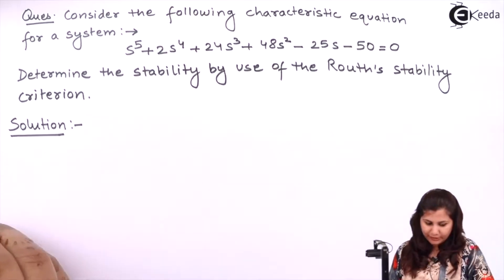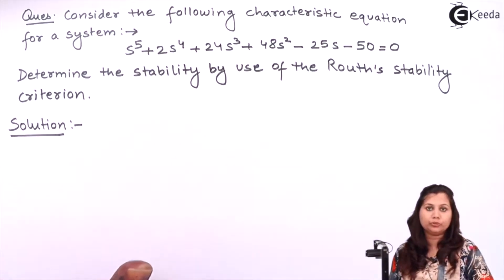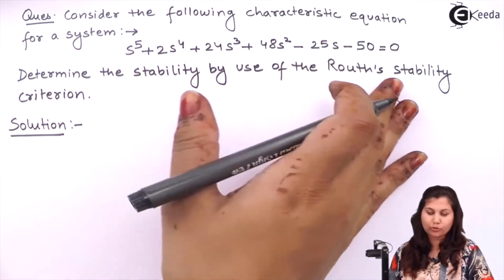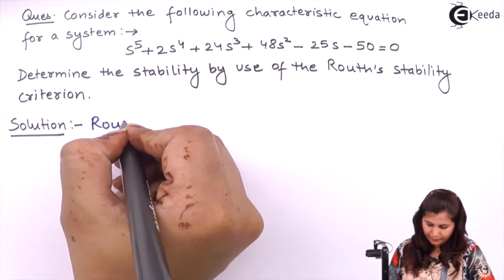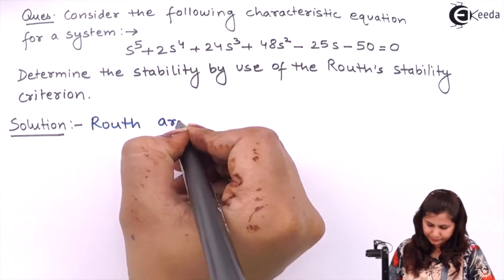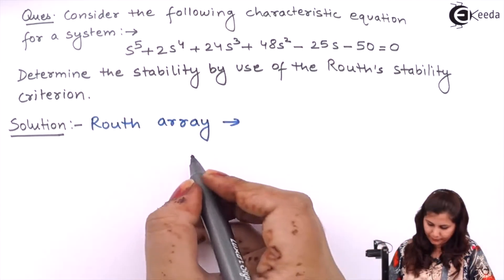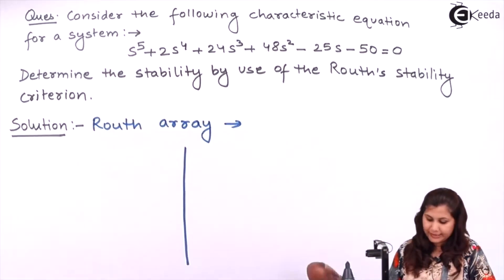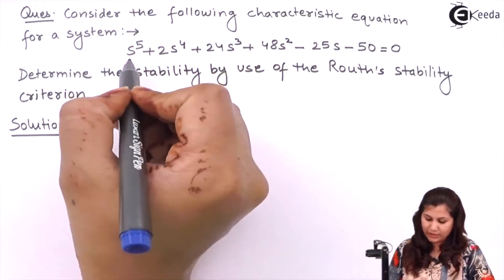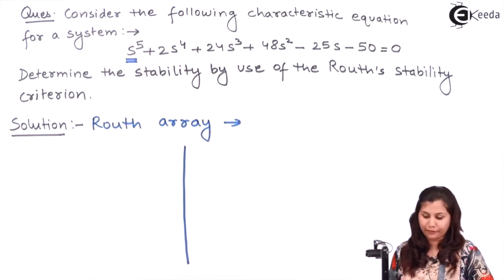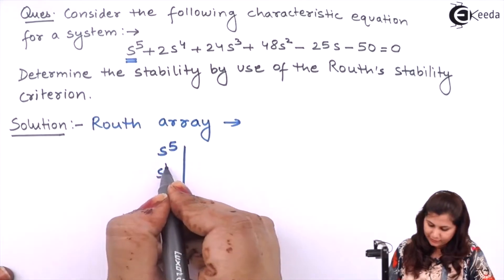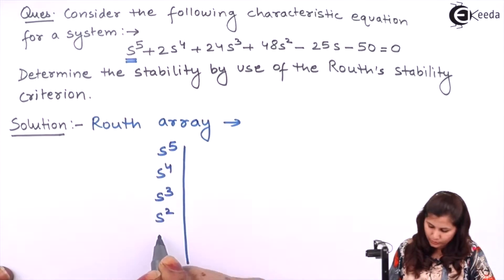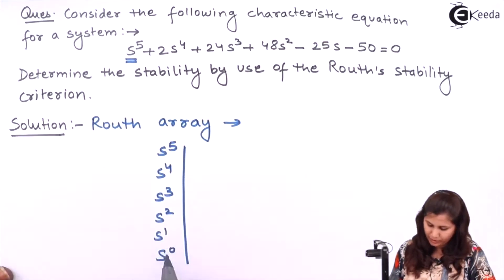So let us first find out the Routh array by using the coefficients of this characteristic equation. The Routh array is given by the highest power. The highest power of S in this characteristic equation is S to the power 5. So we will start from S5, then S4, S3, S2, S1, and S to the power 0.